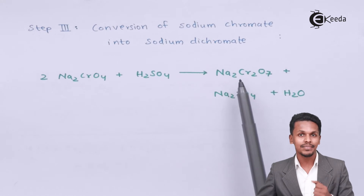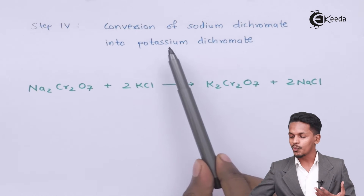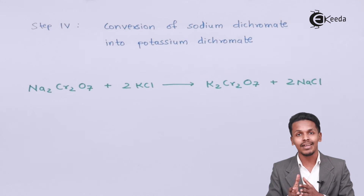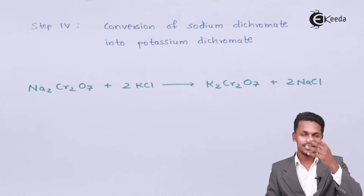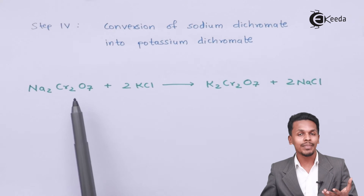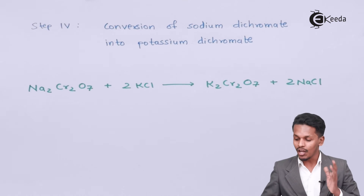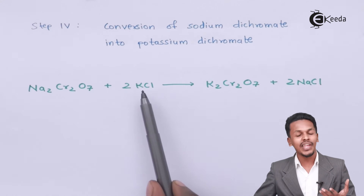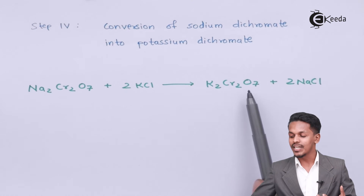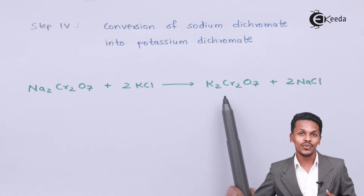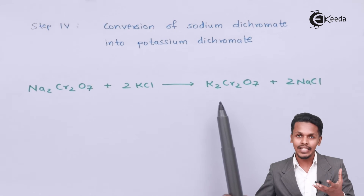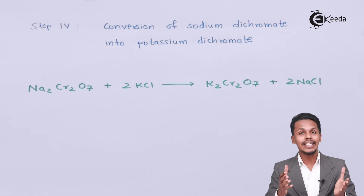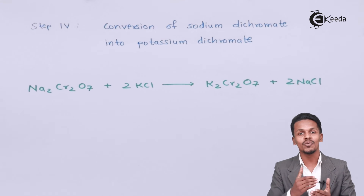The next step is conversion of sodium dichromate into potassium dichromate. Na₂Cr₂O₇ is treated with 2 moles of KCl, and the product obtained is K₂Cr₂O₇ along with 2 moles of NaCl. K₂Cr₂O₇ forms orange-red crystals. This is how we prepare K₂Cr₂O₇ from its ore.